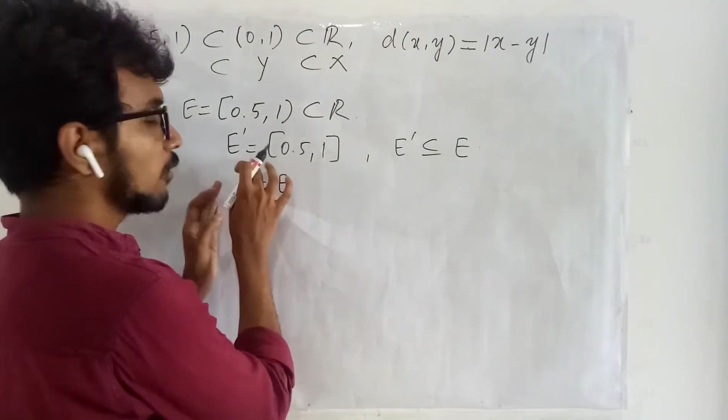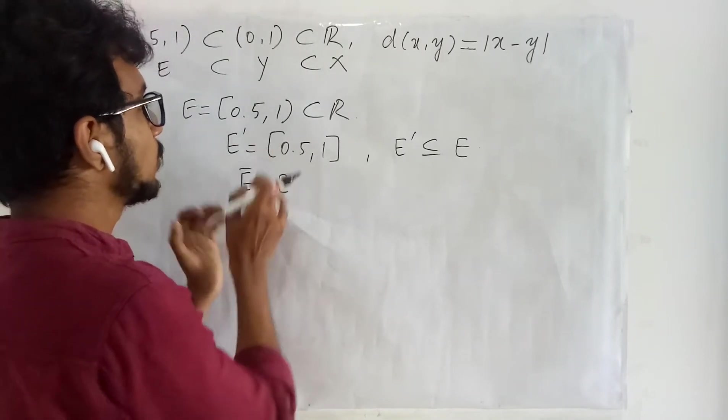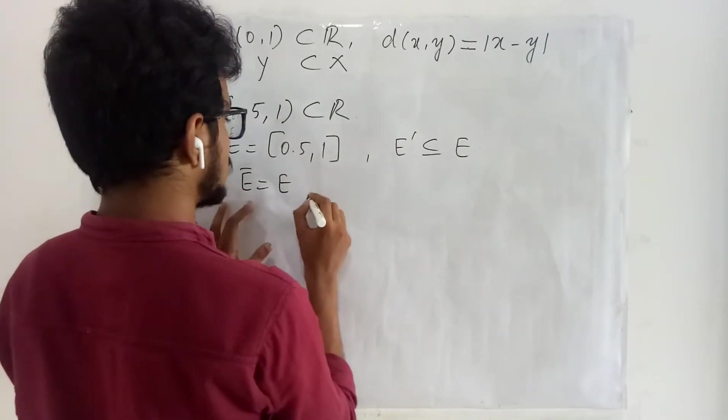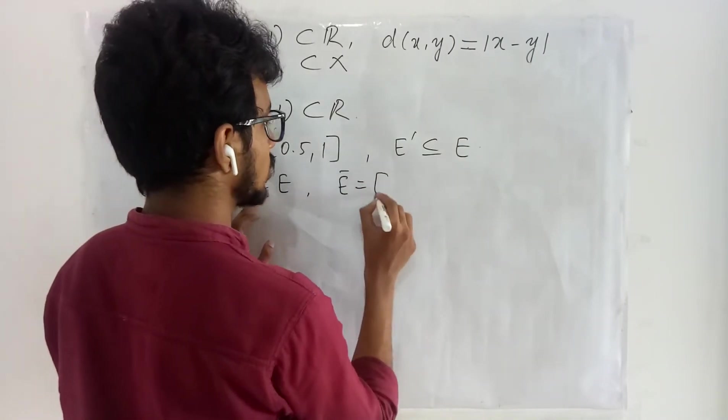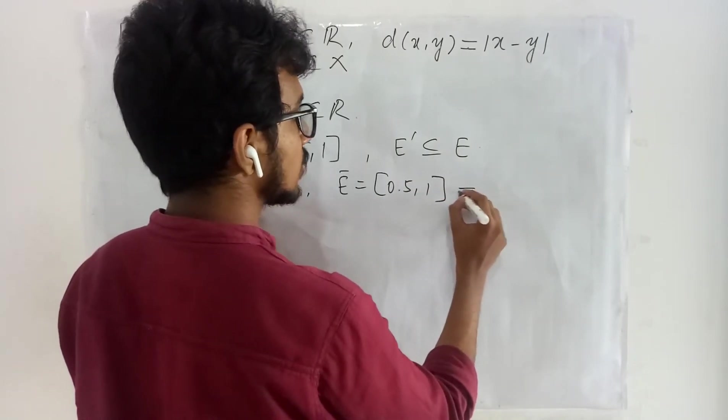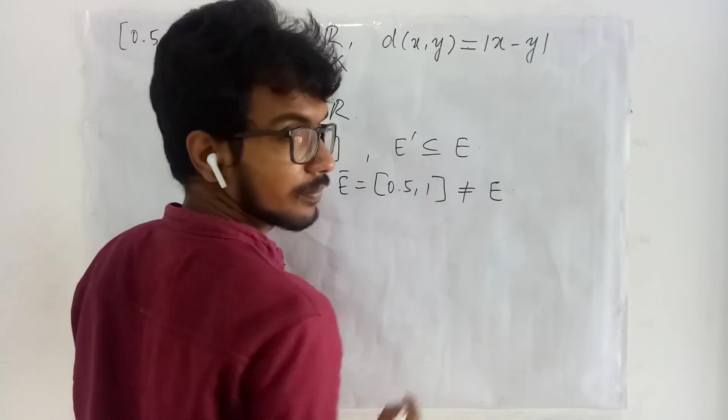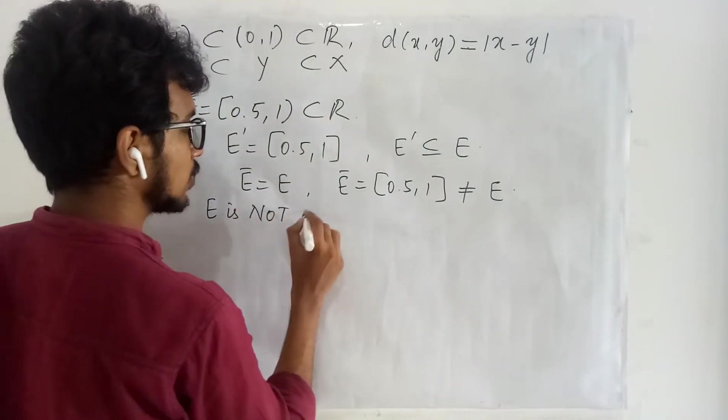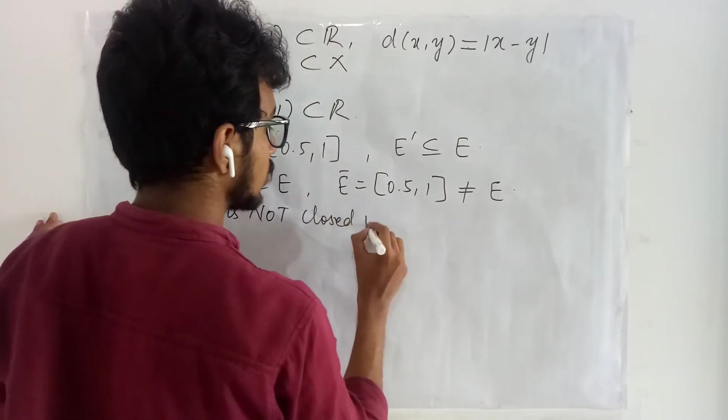So here what we have done is we have collected the limit points of the set in R and even if you examine for this E closure you will get your E closure to be the same set. This is not same as that of your E. Therefore your E is not closed in X.